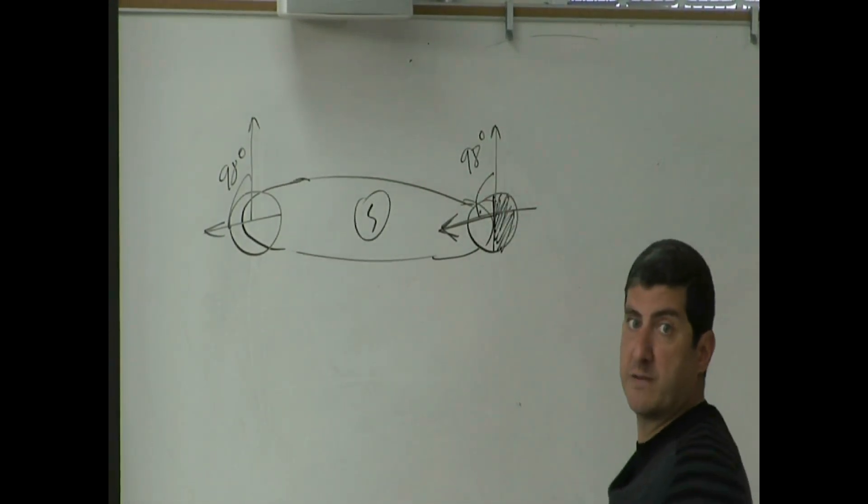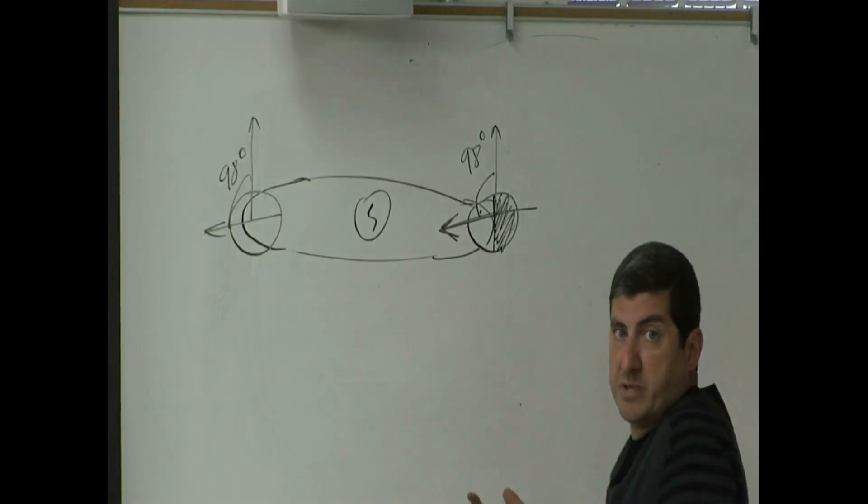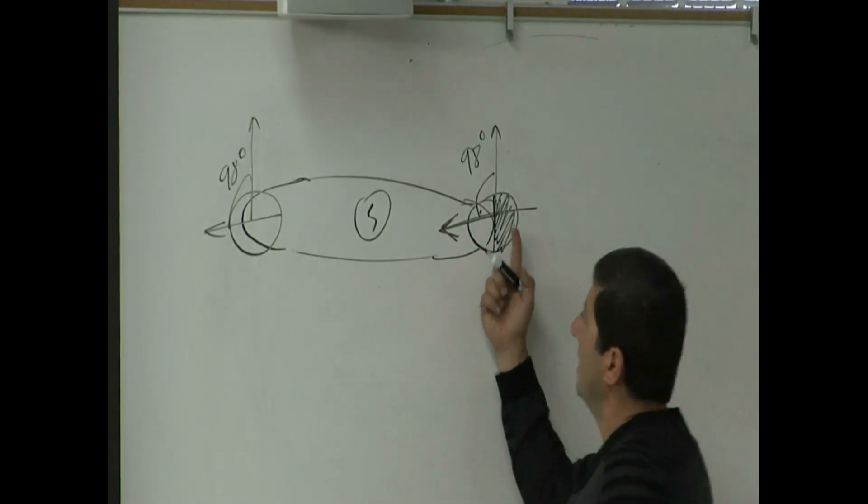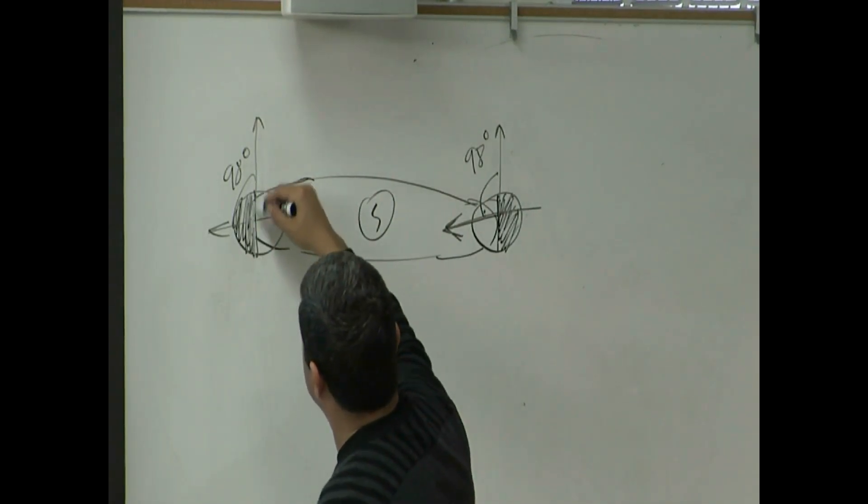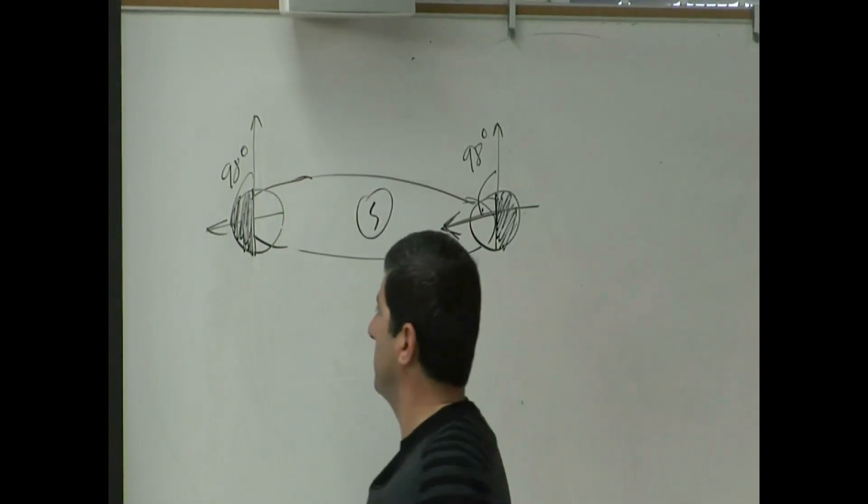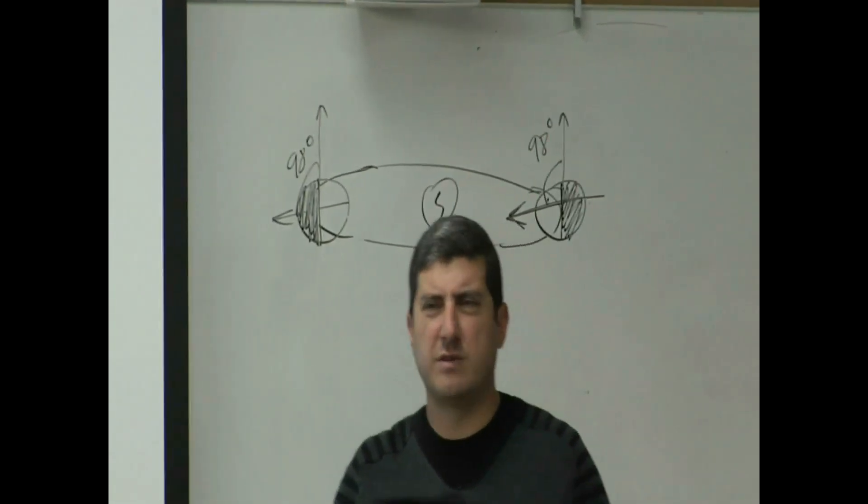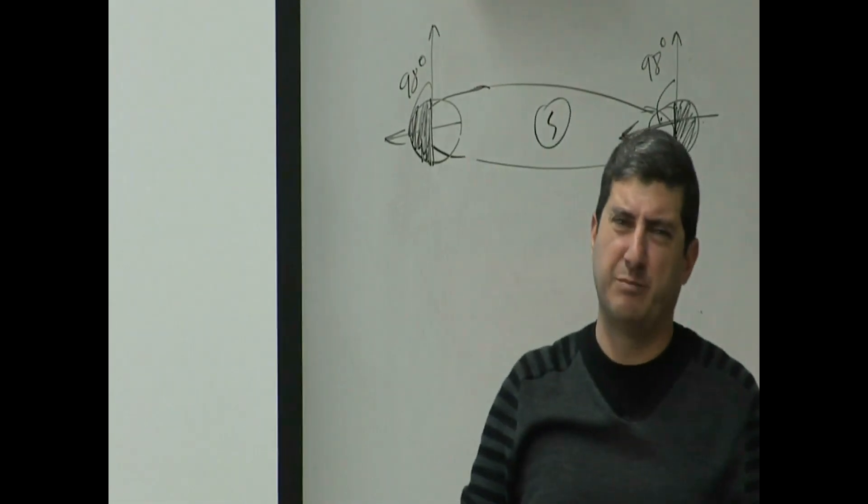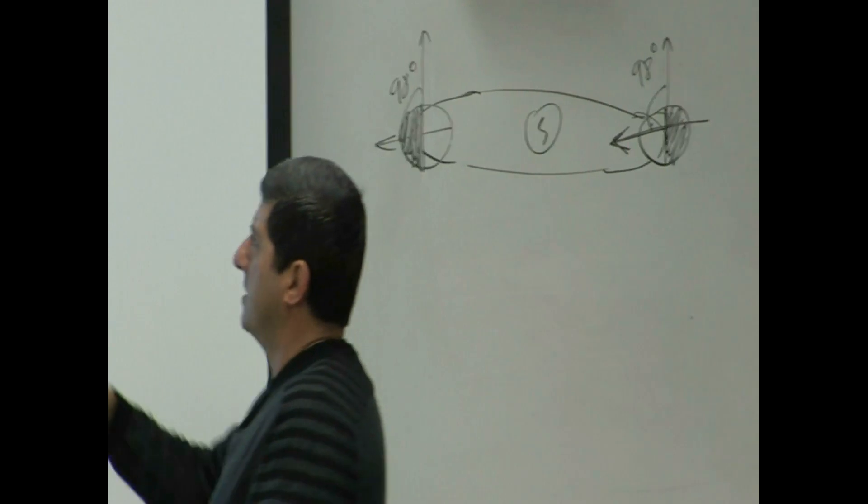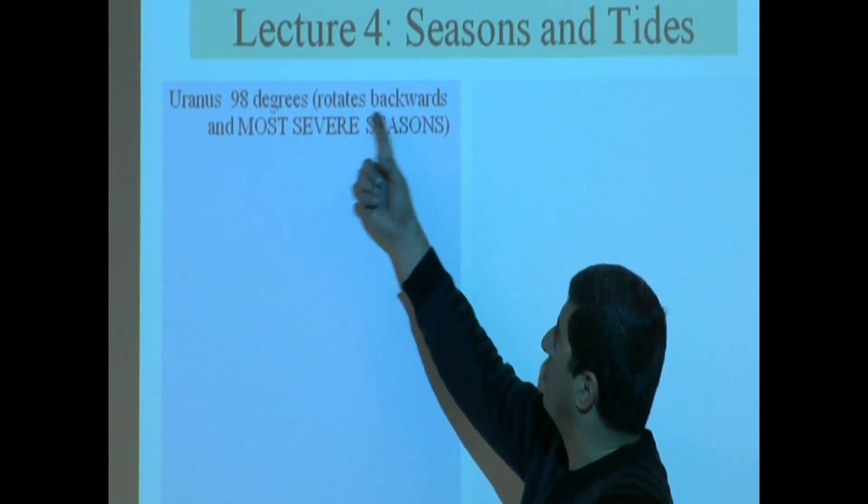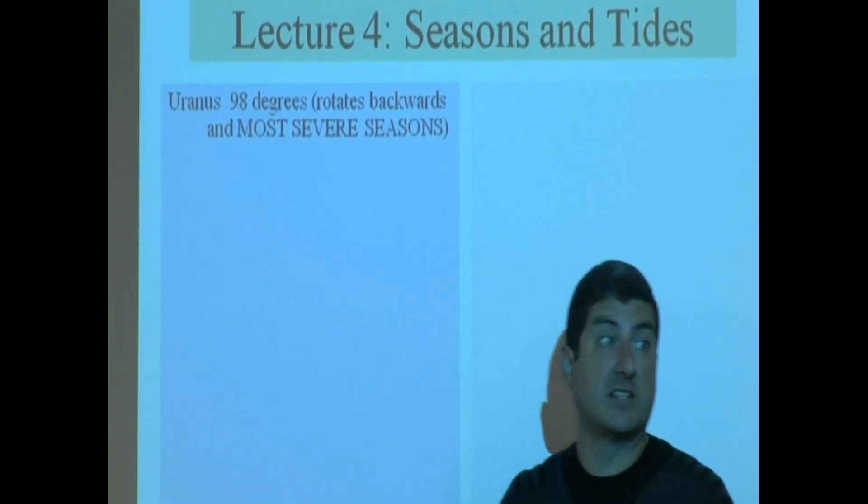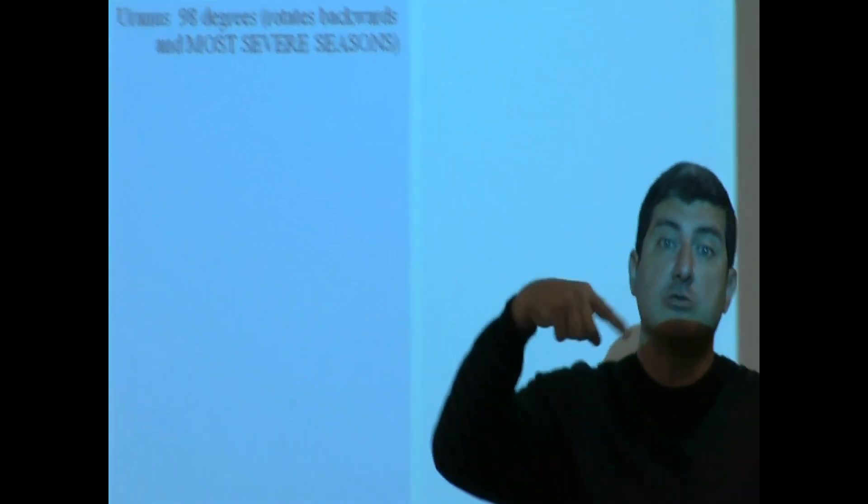If you live here, you see the sun for many years. Completely dark, completely bright. And then if you go to the opposite end, now this is dark, this is bright. So life on a planet like that is impossible. The reason I also say it has most severe seasons and also rotates backwards is because it's greater than 90. Any tilt greater than 90 means it rotates backwards to the Earth.